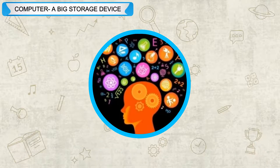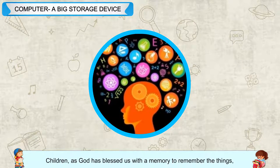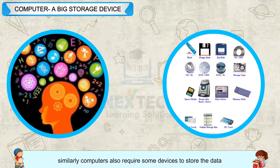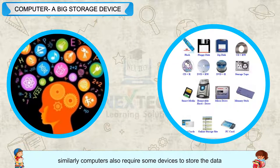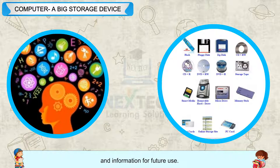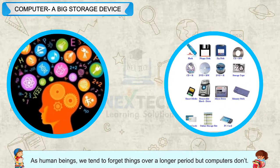Computer — a big storage device. Children, as God has blessed us with the memory to remember things, similarly, computers also require some devices to store the data and information for future use. These devices are known as storage devices or memory devices. As human beings, we tend to forget things over a longer period, but computers don't.